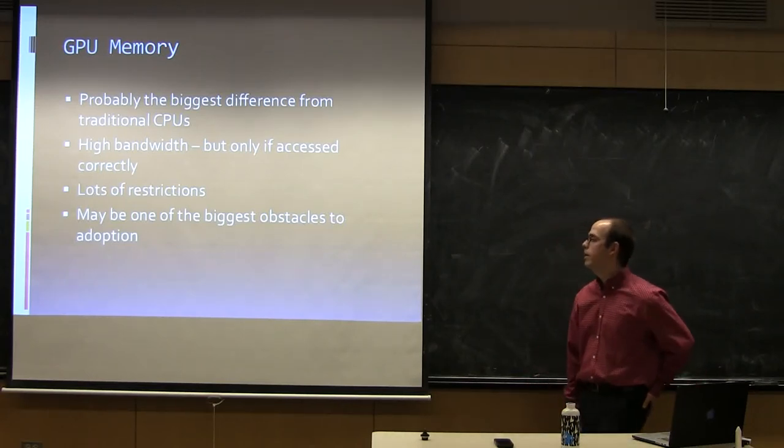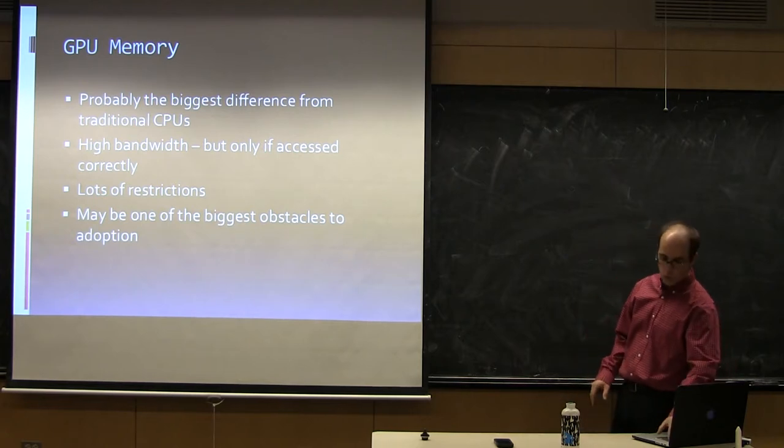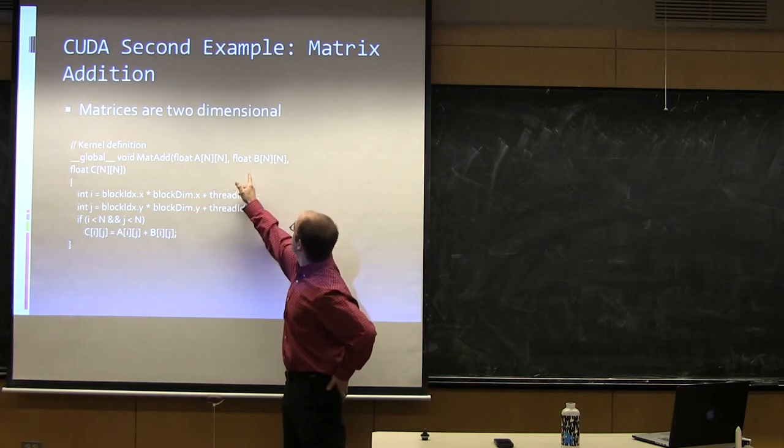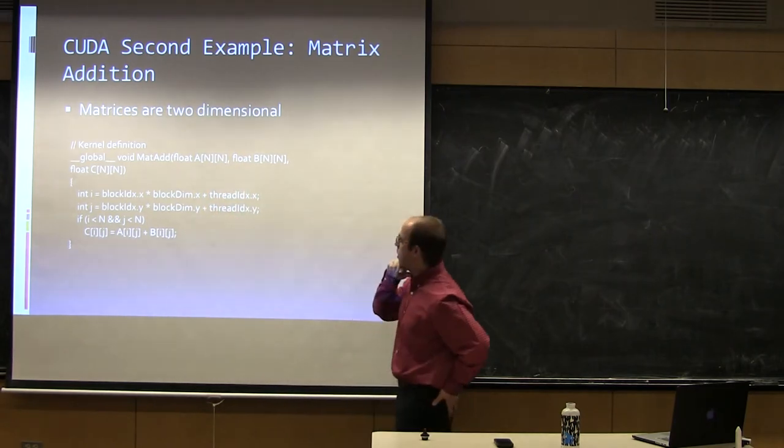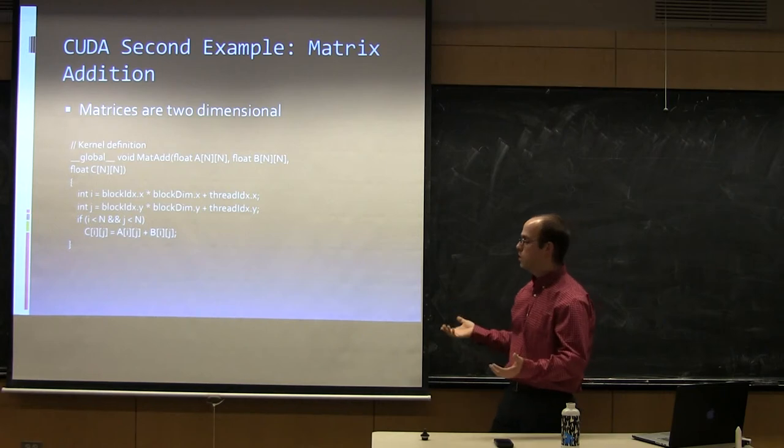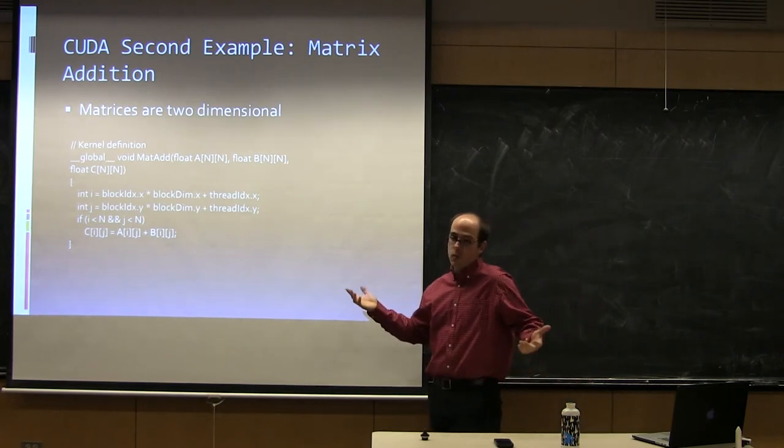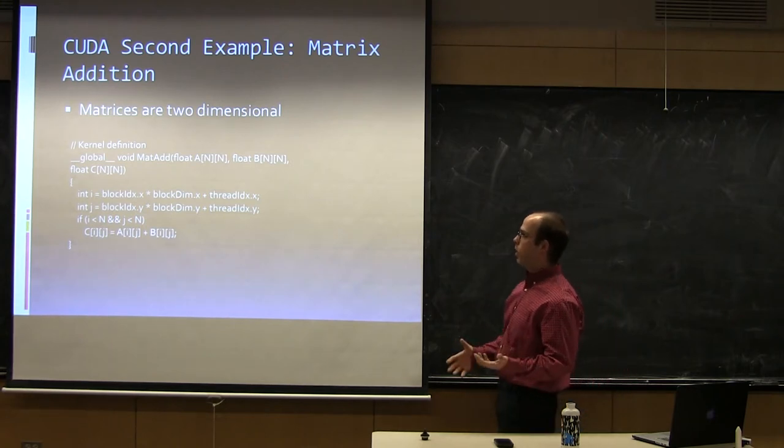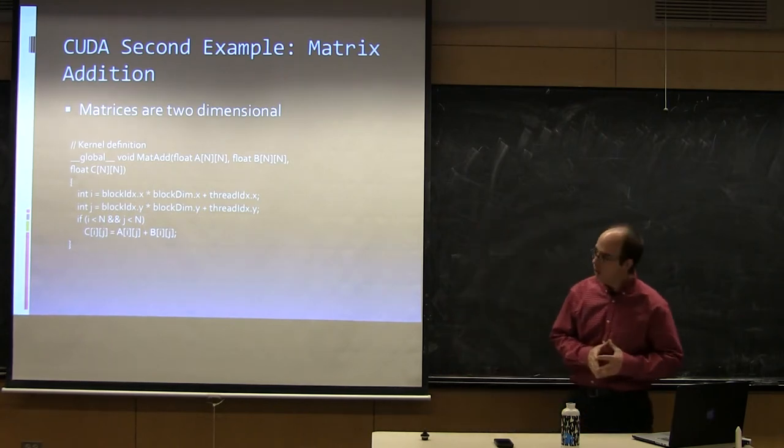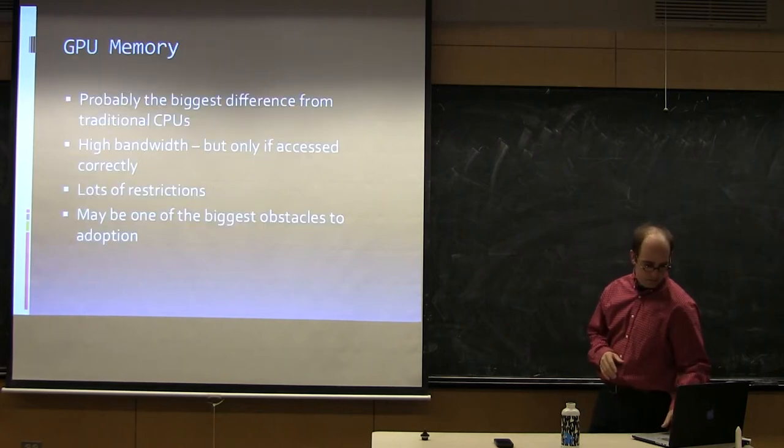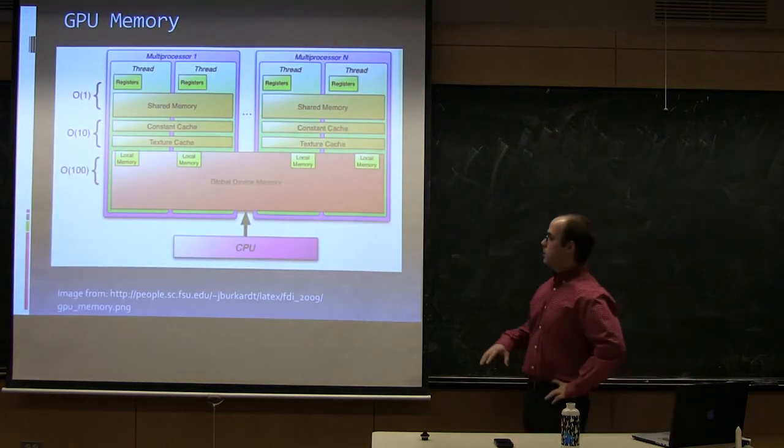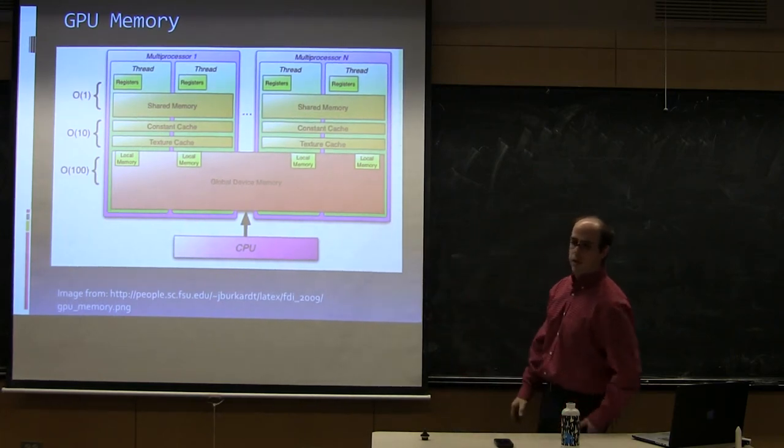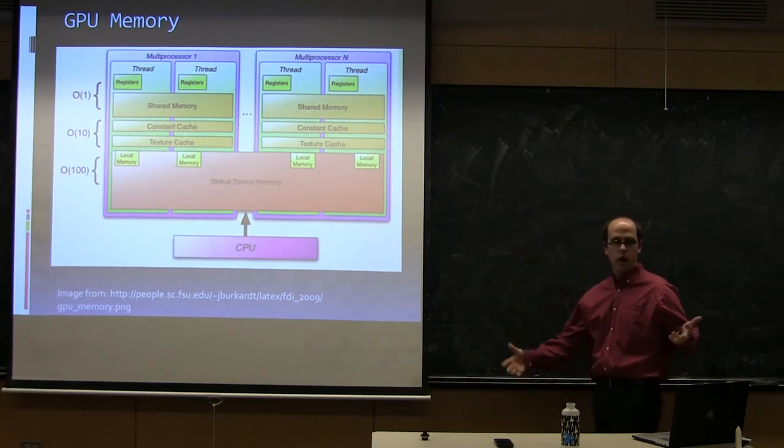GPU memory. When we look at this kernel, we're passing in three float arrays, which are basically regions in memory. If this were on the CPU, those regions would just be in RAM and we'd read from them. But on the GPU, it's a little bit more complicated.